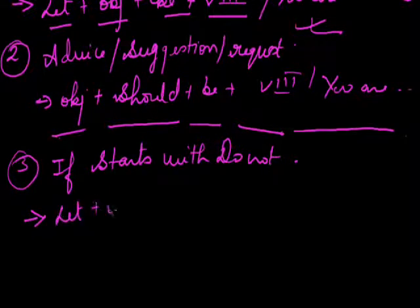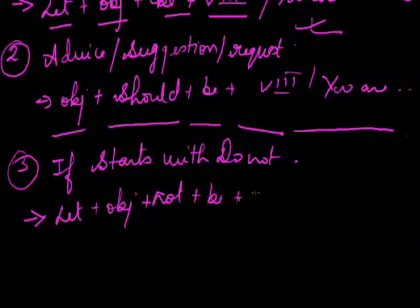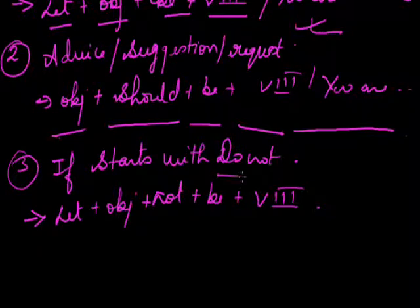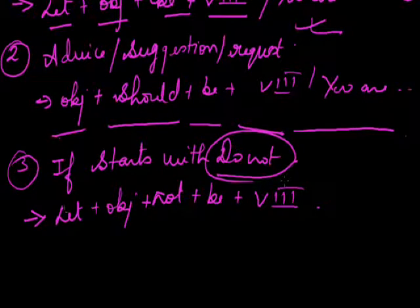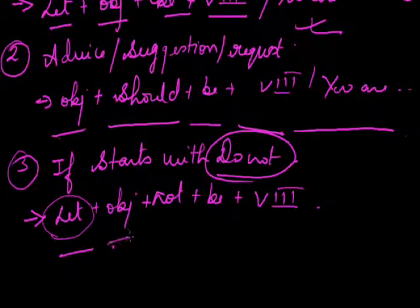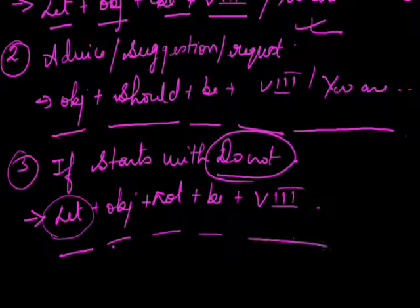The structure is: let + object + not + be + verb third form. So 'do not disturb the class' — the active sentence starts with 'do not,' so the passive will start with 'let': 'let the class not be disturbed.'